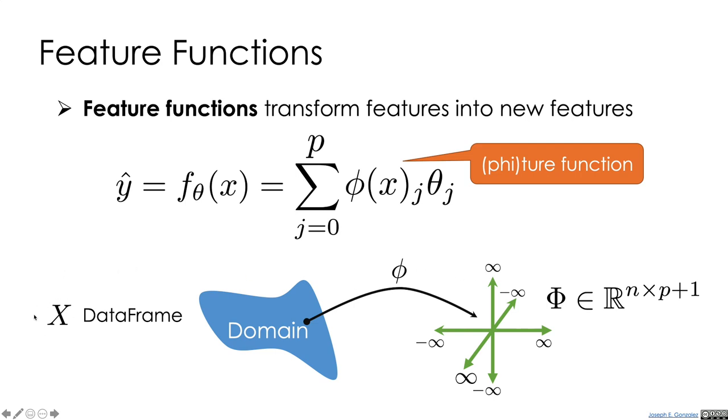We take our data frame x and n by d, apply the phi function, which will transform it into this capital phi, which is our features in this p plus 1 dimensional feature space, where the plus 1 is because we're going to add this extra constant term. So this is an n by p plus 1 matrix.